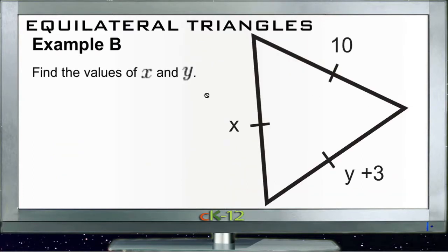Now let's take a look at example B. Example B says find the values of x and y. So again, very similar situation here. We know that 10 is exactly the same thing as x because these two sides being an equilateral triangle have to be identical. So that one's pretty straightforward, x is just 10.